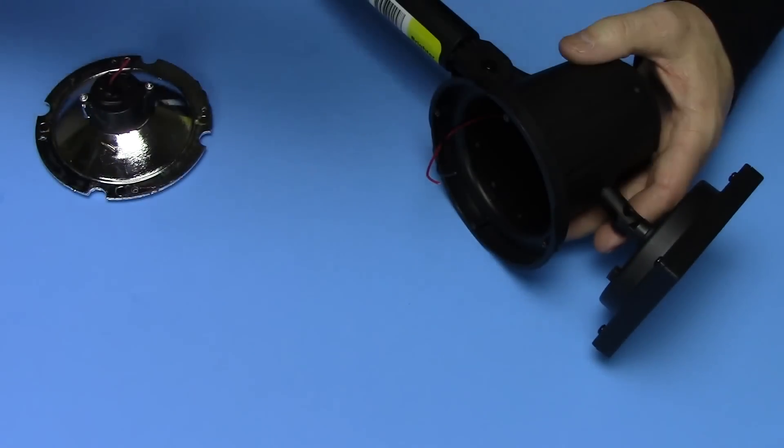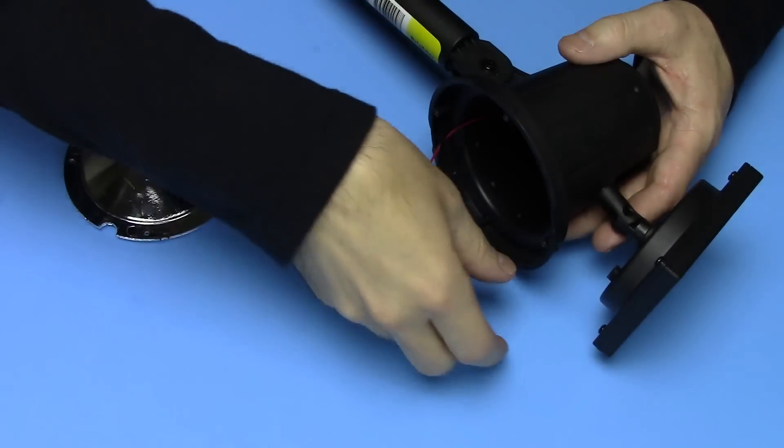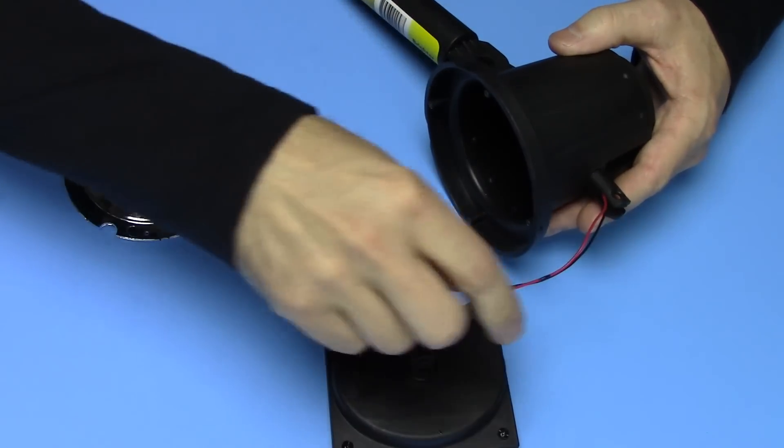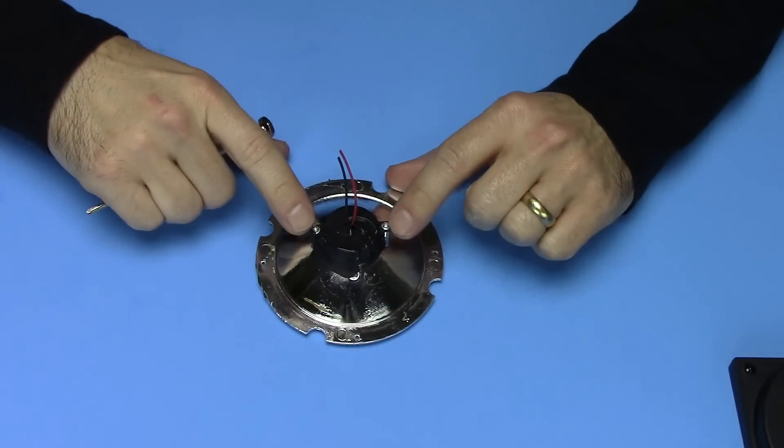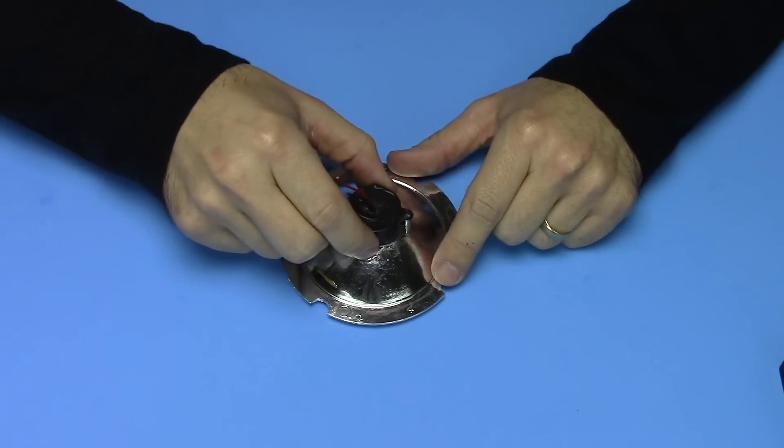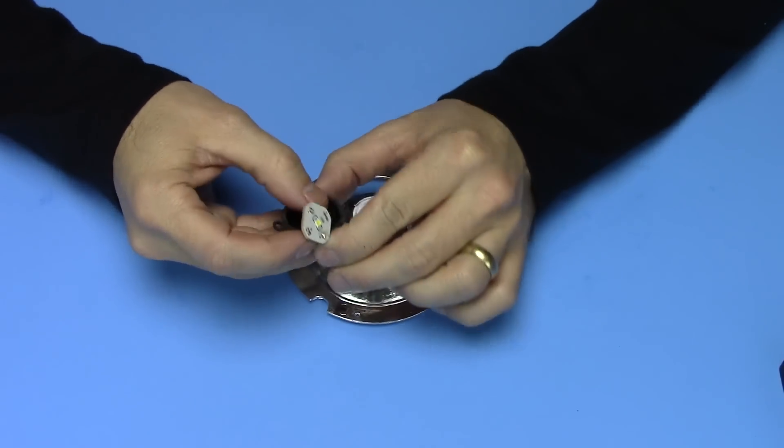Okay, go ahead and remove your screw and pull out your solar panel. Okay, remove these two screws. Now remove your cap and remove your LED from inside the cap.